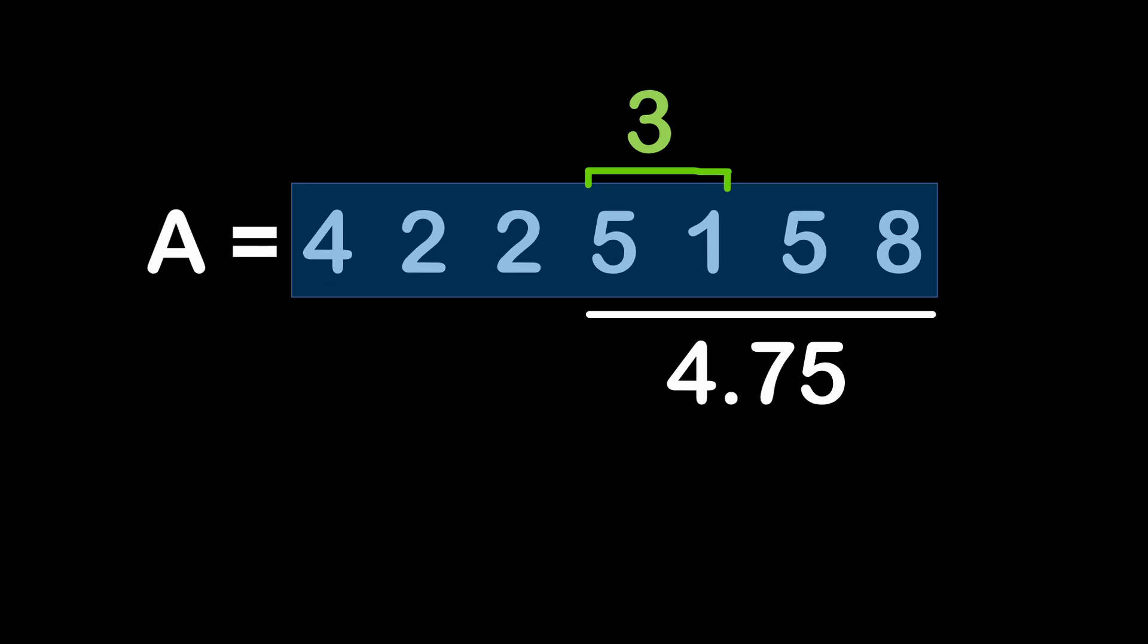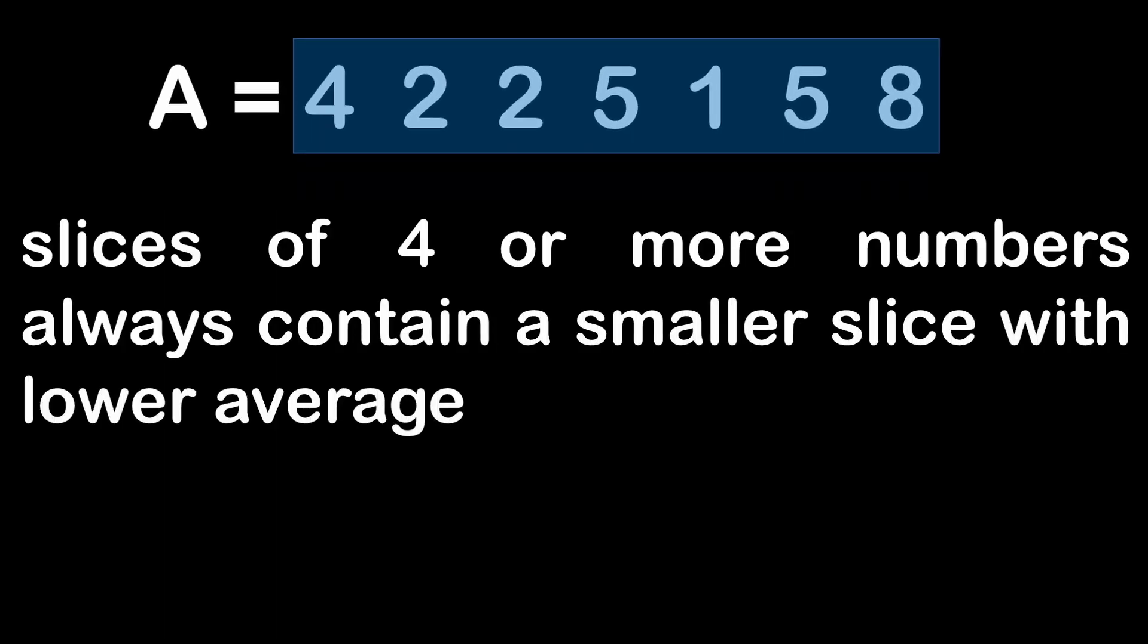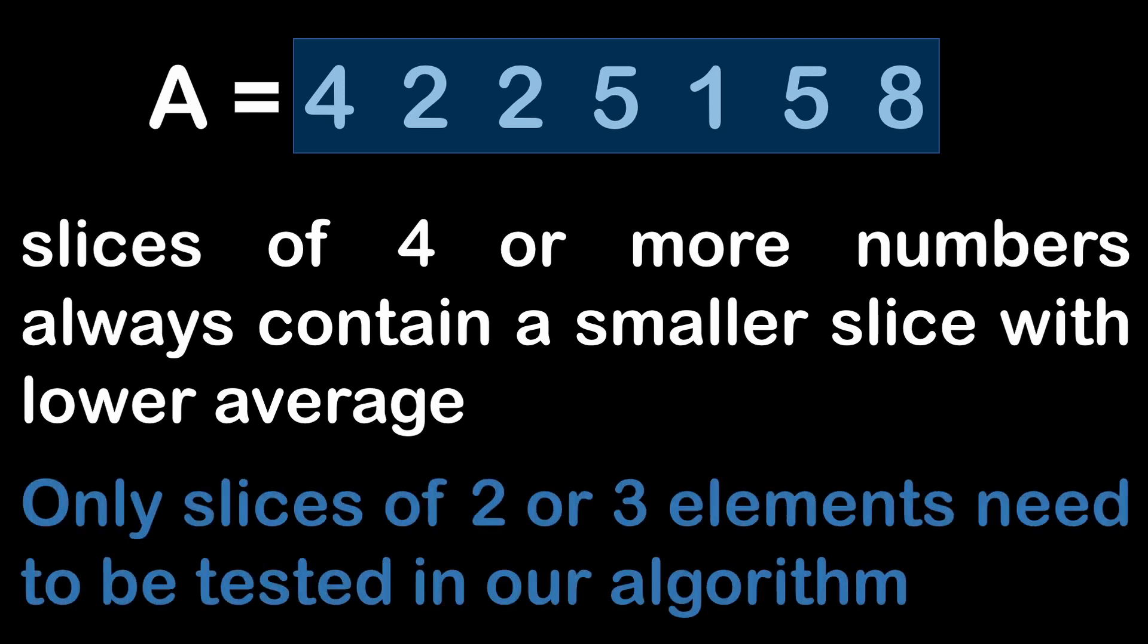So in other words, if we continue testing our slices and sub-slices, we will notice that slices of 4 or more numbers always contain a smaller slice with lower average. And this means that we only have to test slices of 2 or 3 elements. Now this property that we have just explained here, we've seen it in numbers, in numerical examples. However, I don't have the demonstration to generalize this point, or to demonstrate why it is this way. And this is why I've described this problem as a mathematics background problem. It's not really about the complex algorithm, it's about finding this key idea that will help you make your algorithm more efficient.